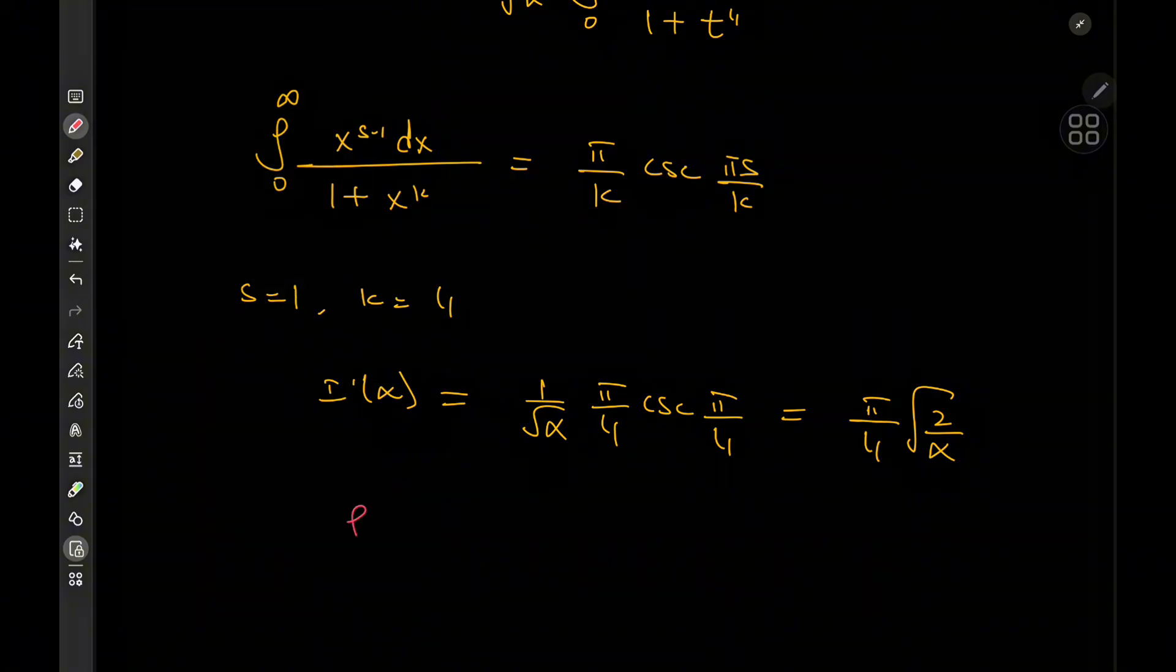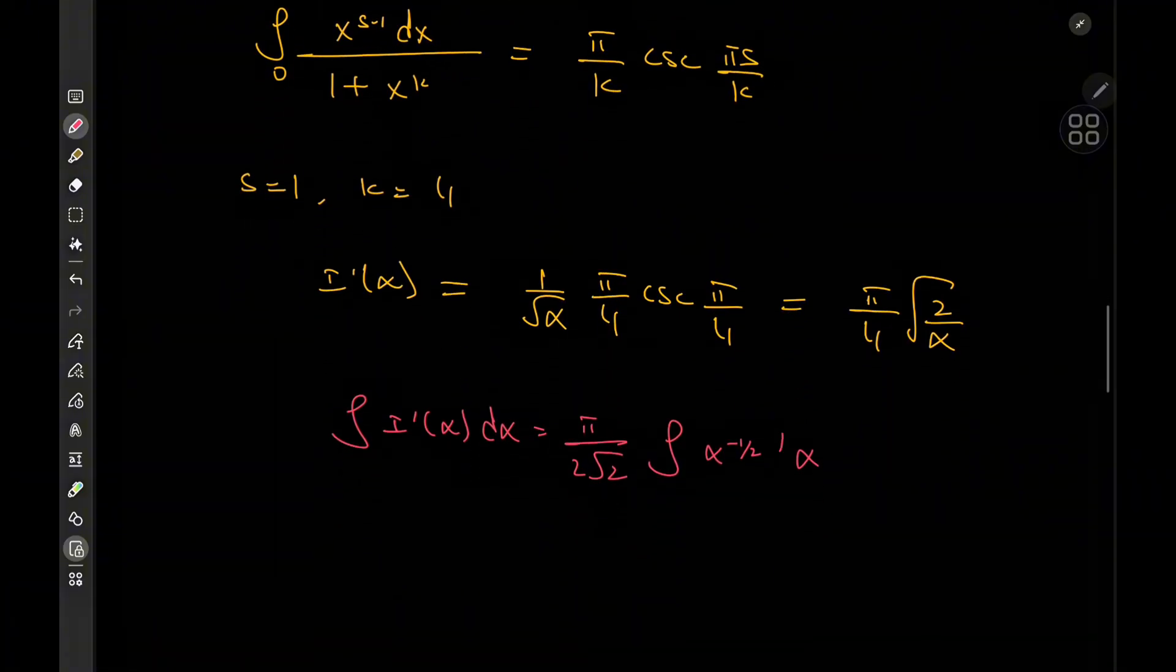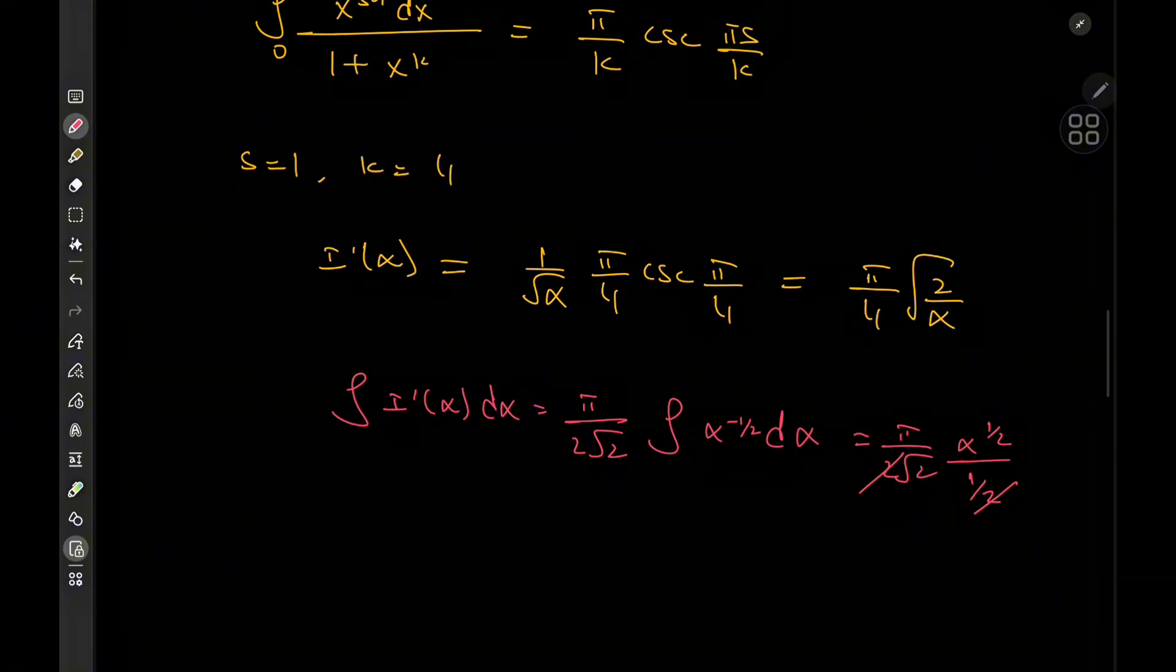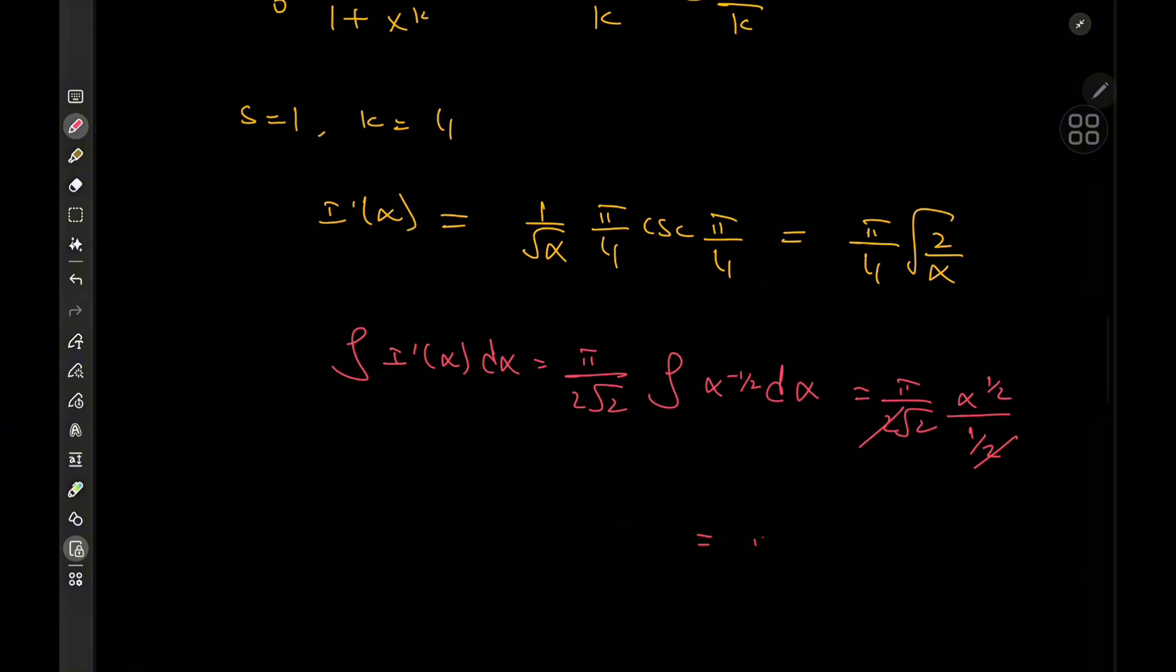And we should now recover back the integral function by integrating with respect to the alpha parameter, so that we have pi over 4 times the integral. Rather wait, we also have pi root 2 over 4, which is 2 times 2. So this is just pi over 2 root 2 times the integral of alpha to the minus one half d alpha, which of course is pretty elementary to evaluate. We have pi over 2 times root 2, alpha to the one half over one half. And this should cancel with the one half outside, resulting in a pi times root alpha over 2 plus a constant of integration c. And on the left, of course, we have I of alpha.